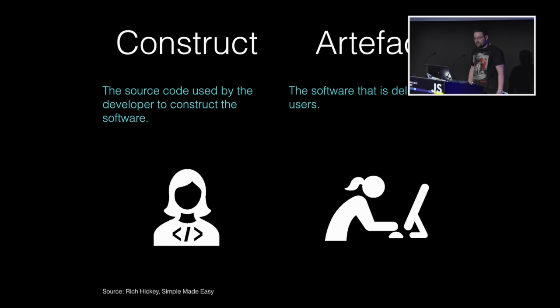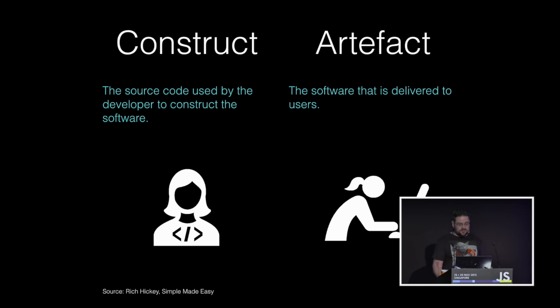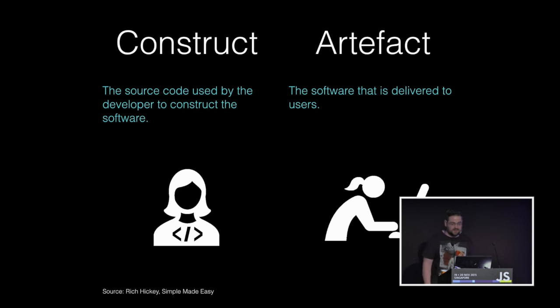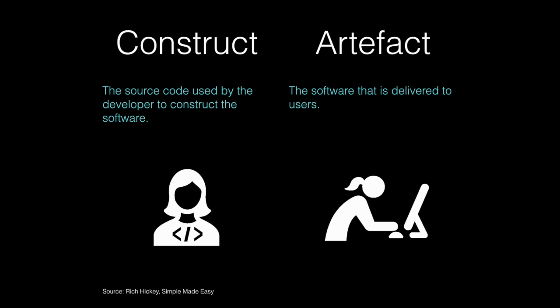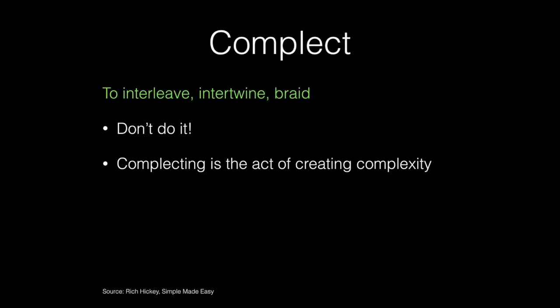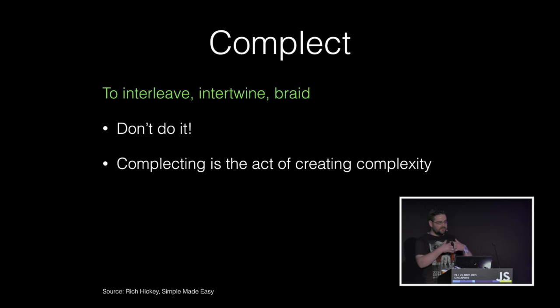We're in the business of producing artifacts for users, but we think so much about the constructs. Users care about usability, correctness, performance, and the ability to change the software — these are all attributes of the artifact, not the construct. Complexity is endemic in software because as developers we're too often thinking 'I like this because it's good for me personally right now.' Rich Hickey revived the archaic word 'complecting' to describe creating complexity — it means to interleave, entwine, or braid. Complexity is bad, so obviously complecting is bad.